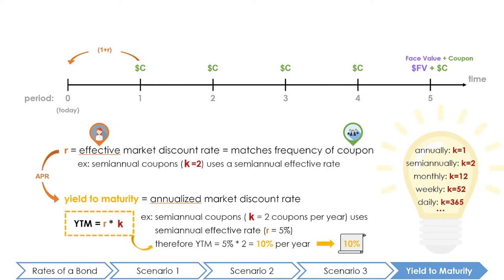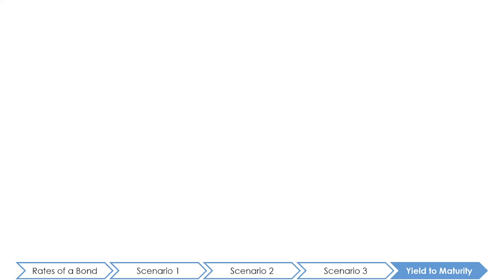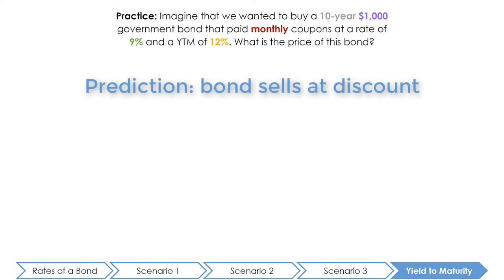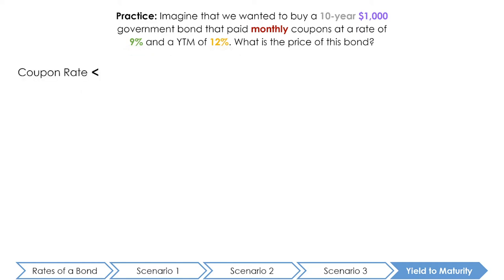Let's see the yield to maturity in action. Imagine we wanted to buy a 10-year one thousand dollar government bond that paid monthly coupons at a rate of nine percent and had a yield to maturity of twelve percent. What is the price of this bond? Right off the bat we can expect this bond will sell at a discount, because since both the coupon rate and the yield to maturity are expressed in APR we can directly compare them — and when the coupon rate is less than the required rate of return, the bond sells at a discount.